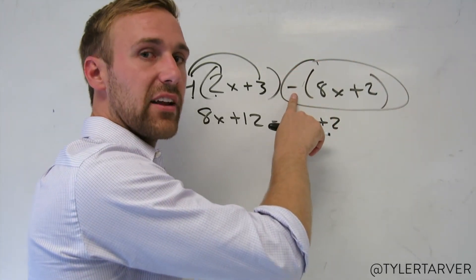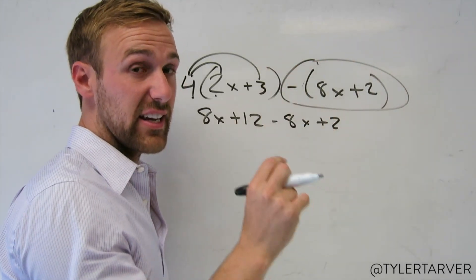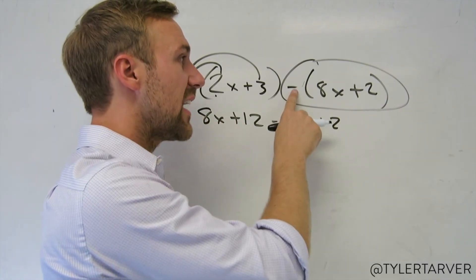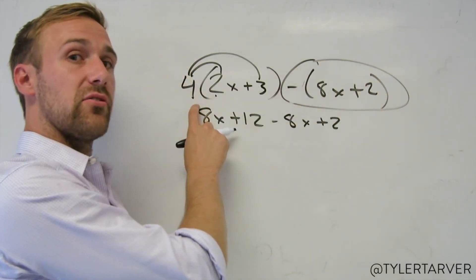They make this negative not as important as it is. It is very important. This negative still deserves the same distributive property that you gave this 4.